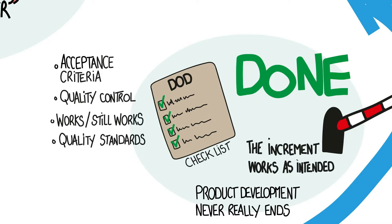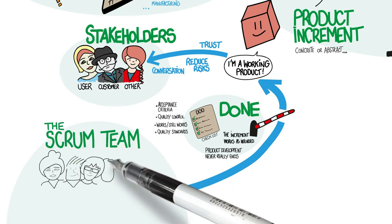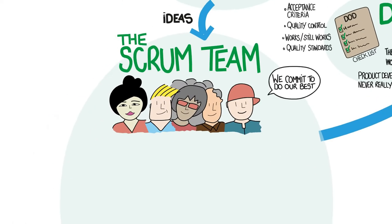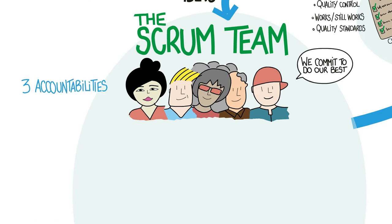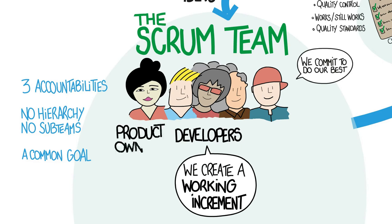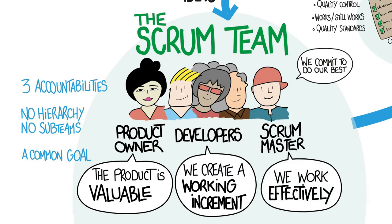The scrum team is accountable for creating a valuable, working product increment every sprint. Ideas come into the team, the product owner sequences them, and the scrum team commits to do its best to turn the most valuable of those ideas into a working solution by the end of the sprint. Accountability defines each member's contribution to the overall result. Scrum forbids hierarchies or sub-teams within the scrum team — there is one team working towards a common goal. The scrum team consists of developers, a product owner, and a scrum master.